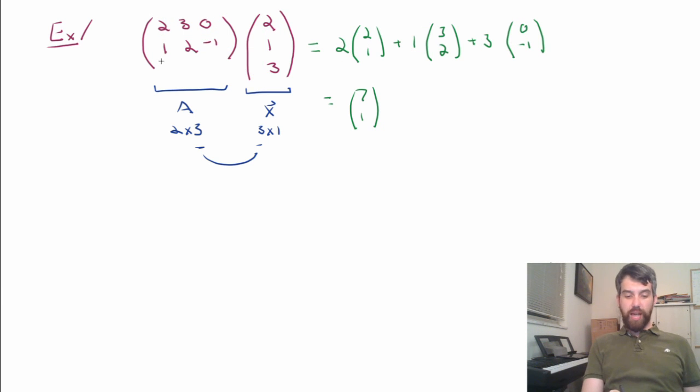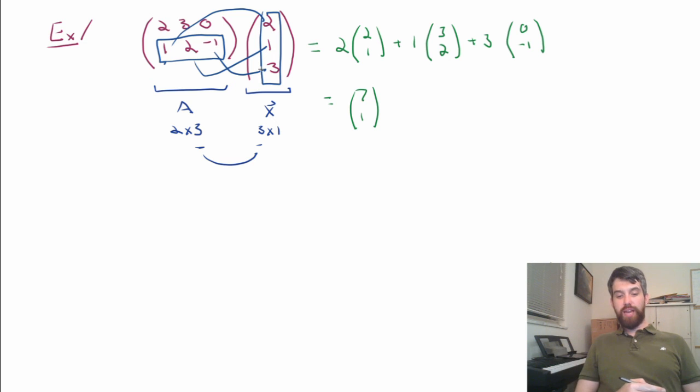I can also do the same basic idea by going along the bottom row, and then this column as well. And I'm going to say, look, I'm going to connect the first two components, and then the second two components, and then the third two components. I've got 1 times 2, and then 2 times 1, and then minus 1 times 3, so that was 2 plus 2 is 4, minus 3 is 1, and that gave me this 1 down here.